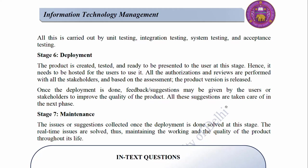Stage 7 — Maintenance: The issues or suggestions collected once the deployment is done are solved at this stage. The real-time issues are solved, thus maintaining the working and quality of the product throughout its life.